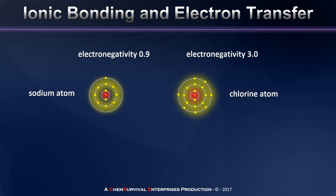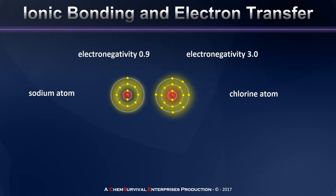Next we need to look at their electron configurations. Notice as I bring them a little bit closer here that sodium has a neon core with a 3s1 electron — that's just one electron in its valence shell. Meanwhile, the chlorine atom has a neon core with a 3s2 3p5 valence shell, just one electron away from having a noble gas configuration similar to that of argon.